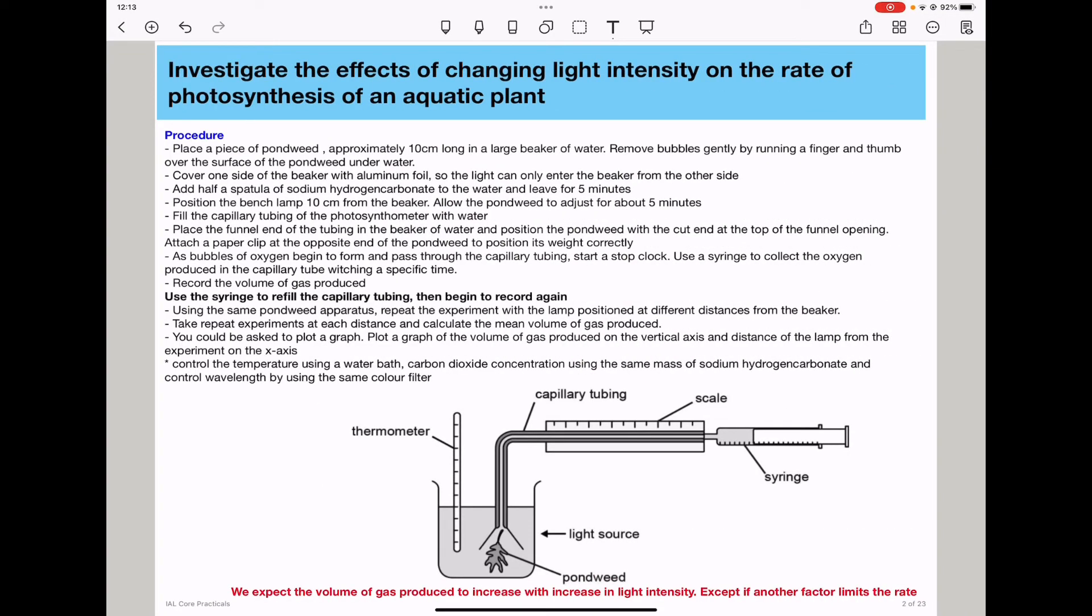In the first experiment, I'm investigating the effects of changing light intensity on the rate of photosynthesis of an aquatic plant. A suitable aquatic plant is maybe a Canadian pondweed plant. The setup for the experiment is as you can see here, and because we have to control the light intensity, this side of the experiment is covered with aluminium foil in order for a light source to come from only one direction.